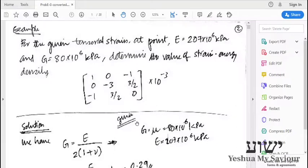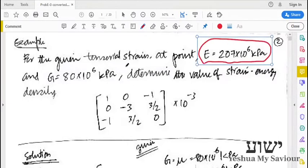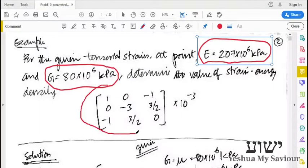We are given the values of Young's modulus, that is 207 GPa, and the value of the shear modulus G = 80 GPa. And they give the tensorial strain or small strain tensor.